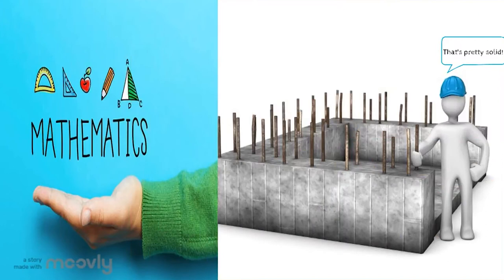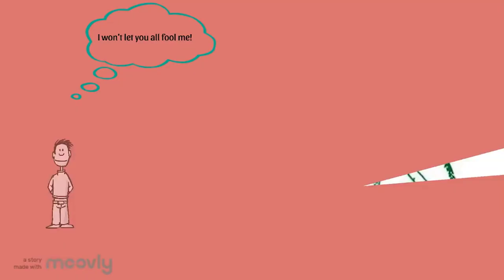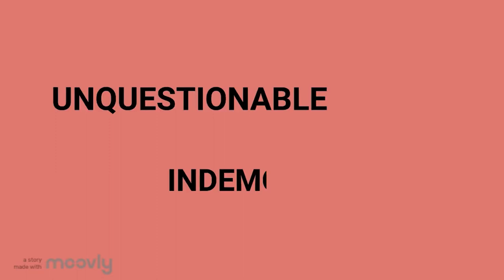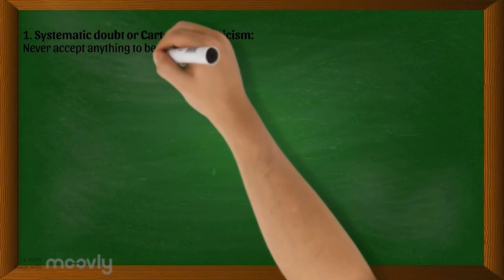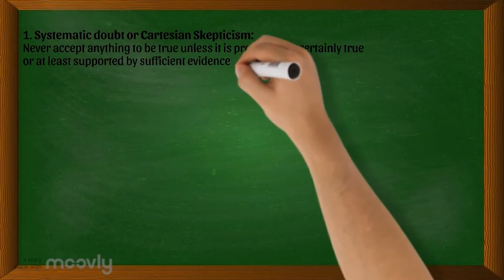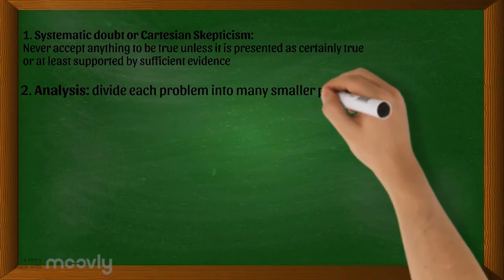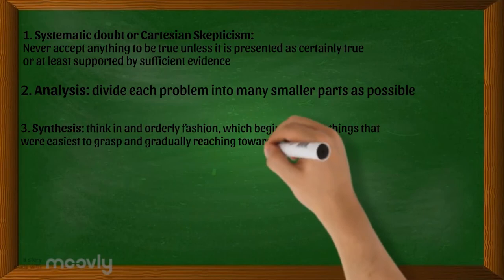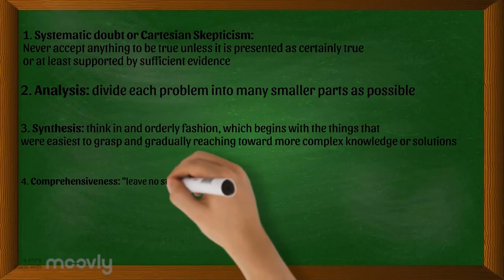Descartes was very much concerned with the deceptions of the senses, and he went on to rebuild a new system of truth in his Discourse on Method, based upon unquestionable and indemonstrable first principles. His method is developed based on four rules: first, systematic doubt or Cartesian skepticism — never accept anything as true unless it is certainly true or at least supported by sufficient evidence; second, analysis — divide each problem into as many smaller parts as possible; third, synthesis — think in an orderly fashion, beginning with the easiest things to grasp and gradually reaching toward more complex knowledge; fourth, comprehensiveness — leave no stone unturned, persistently test the general solution, reconstruct arguments and proofs on the model of logic and mathematical reasoning, assuring that nothing was left out.